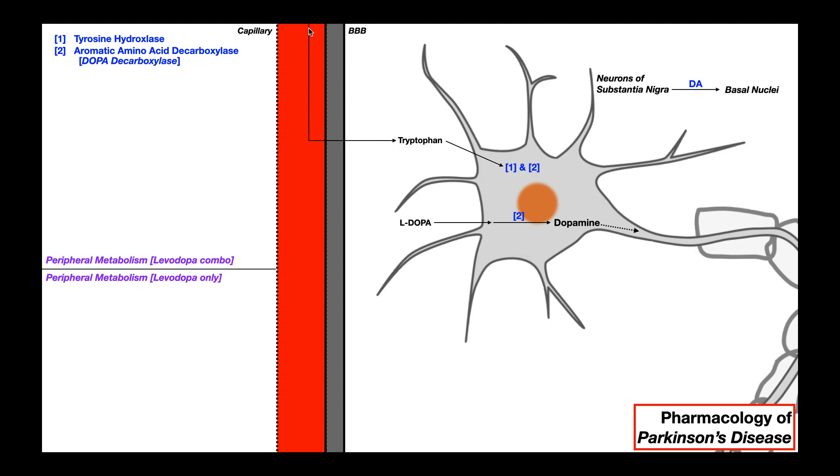Normally, tryptophan would be traveling in the blood. It can cross the blood-brain barrier through transport proteins. Then the tryptophan can be taken up by these cells of the substantia nigra, or really any cell. Once inside, there are a couple of enzymatic reactions. Those are tyrosine hydroxylase, and then aromatic amino acid decarboxylase, which in this context most people just call dopa decarboxylase. That converts the intermediate into dopamine. And then the substantia nigra will use that dopamine to control the basal nuclei.